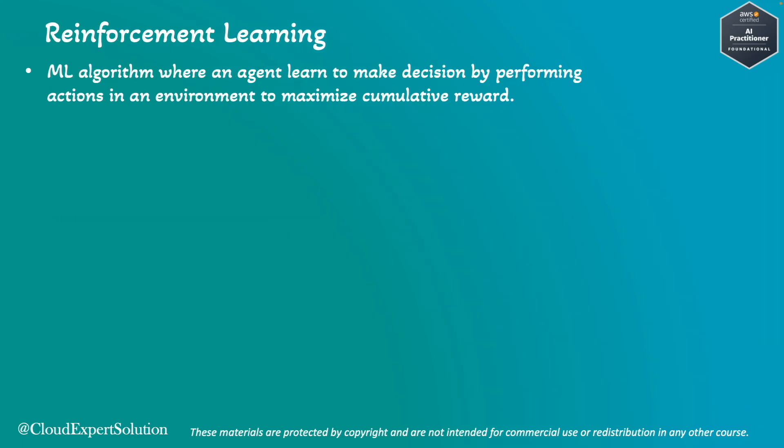Next, we will review reinforcement learning. Reinforcement learning is a type of machine learning where an agent learns to make decisions by performing actions in an environment to maximize cumulative reward.